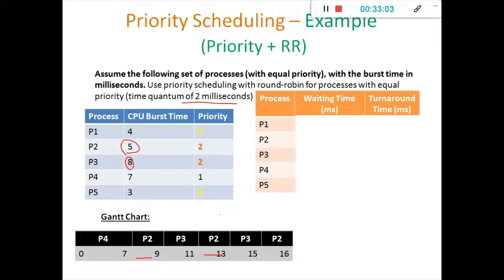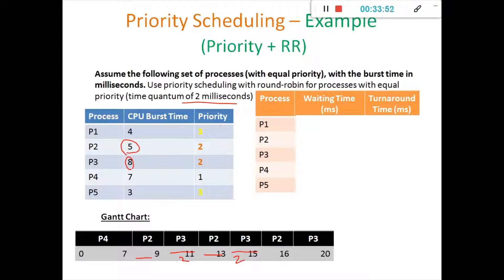Then here 2 milliseconds and here 2 milliseconds — so 4 milliseconds completed, remaining only 1 millisecond. So P2 executes for 1 millisecond then immediately moves to P3. P3 has executed for 4 milliseconds total so far, so remaining 4 milliseconds are there. Since P2 has completed, P3 will complete its execution by taking 4 milliseconds at a stretch. At the 20th millisecond P3 has completed execution. Now it will move to processes P1 and P5, since both have the same priority.